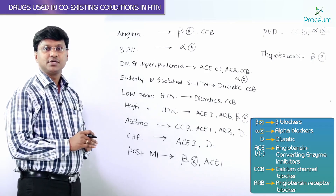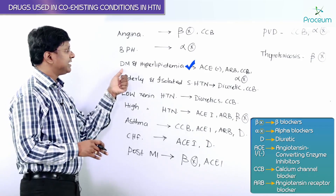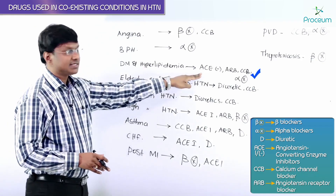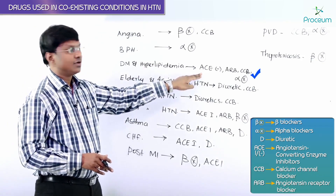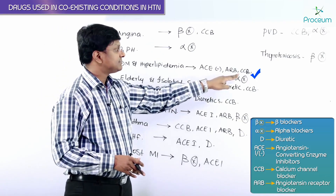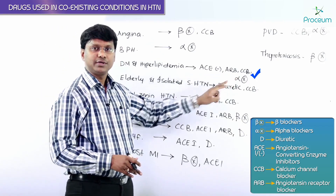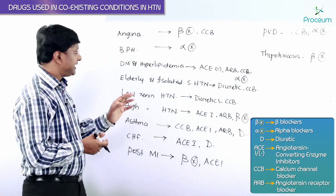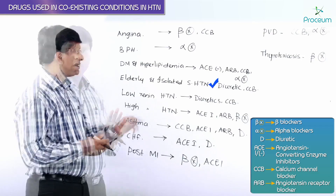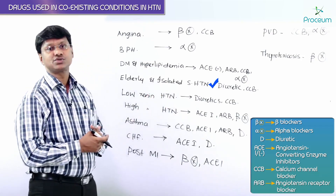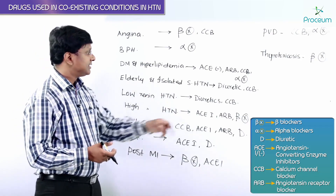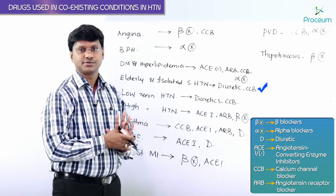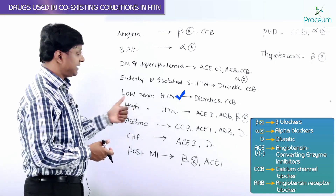If the individual is having hypertension associated with diabetes mellitus and hyperlipidemia, the preferred drugs are ACE inhibitors, angiotensin receptor blockers, calcium channel blockers, or alpha blockers. If the individual is elderly or having isolated systolic hypertension, the preferred drugs are diuretics or calcium channel blockers.